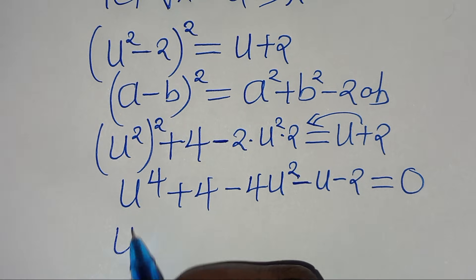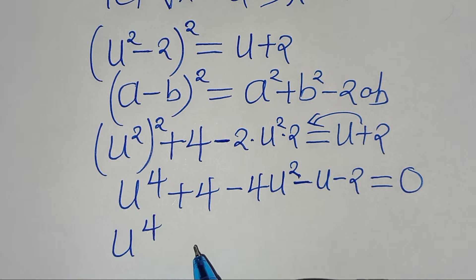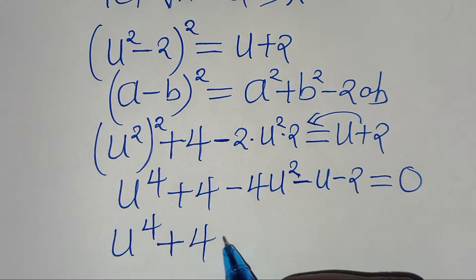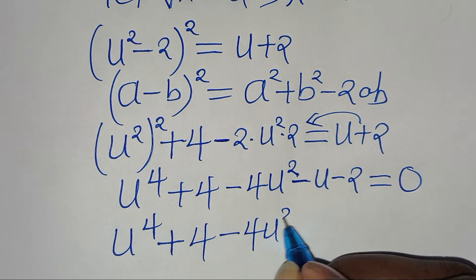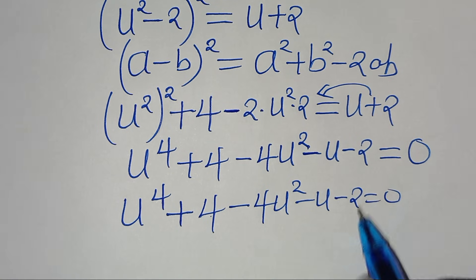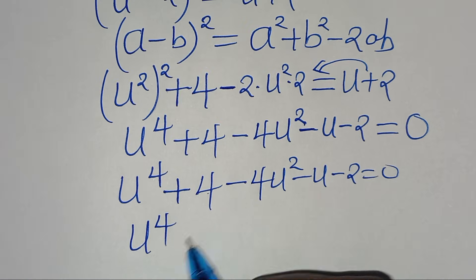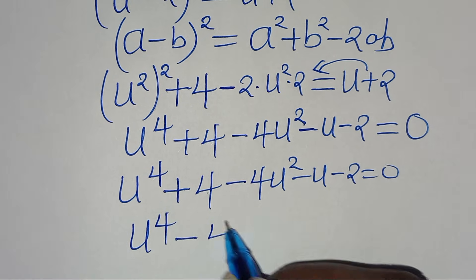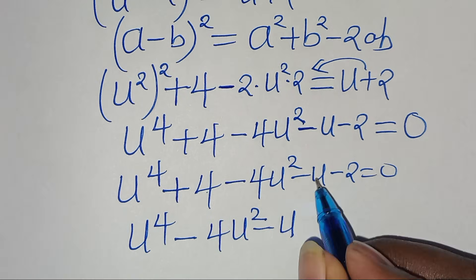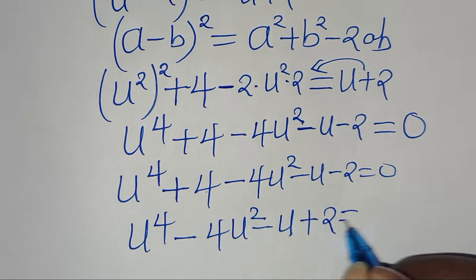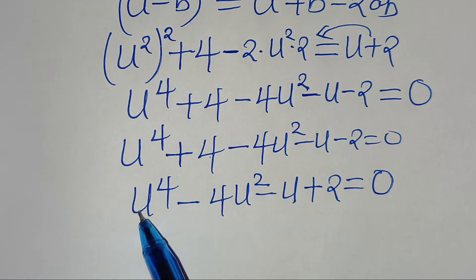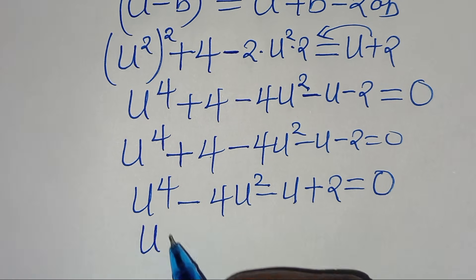Now here we have u to the power of 4, plus 4, minus 4u squared, minus u, minus 2, this is equal to 0. So 4 minus 2 gives us: u to the power of 4, minus 4u squared, minus u, plus 2, this is equal to 0.